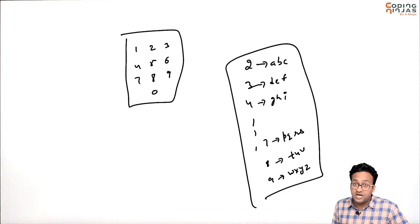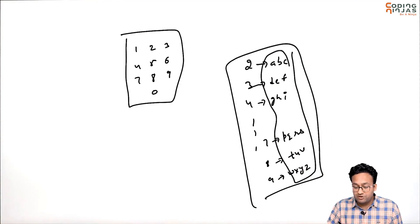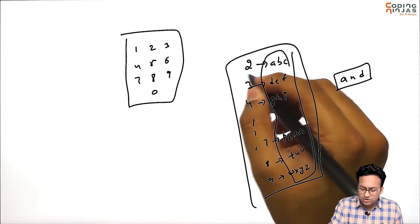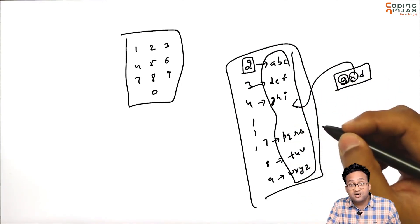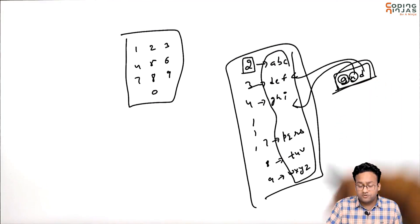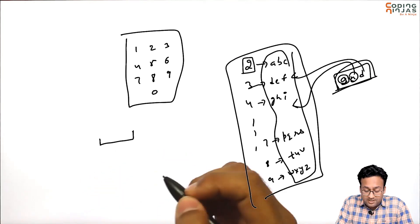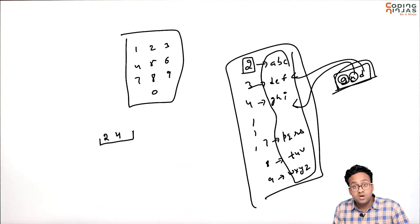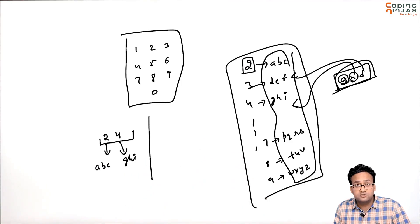Previously, before smartphones, these characters were used for typing. If I wanted to type 'A', I'd press 2; for 'N' I'd press the corresponding number; for 'D' I'd press 3. That's how we used to type and write SMS messages using just the keypad. Now, in this problem you are given a number — let's say 24 — and 2 corresponds to ABC while 4 corresponds to GHI.